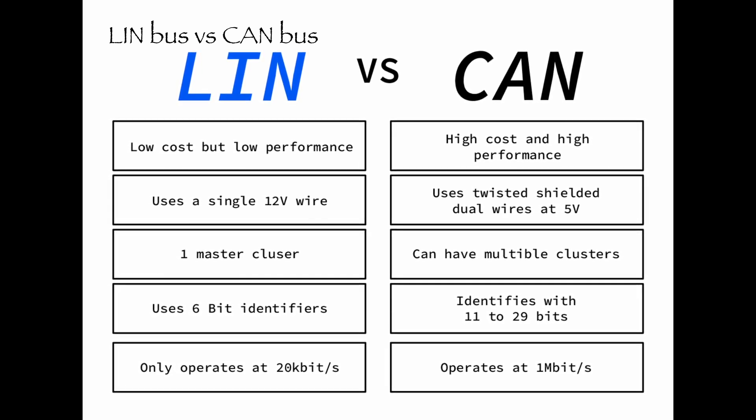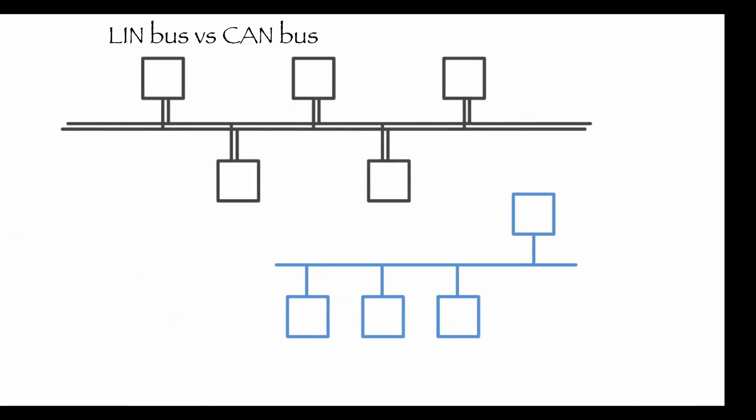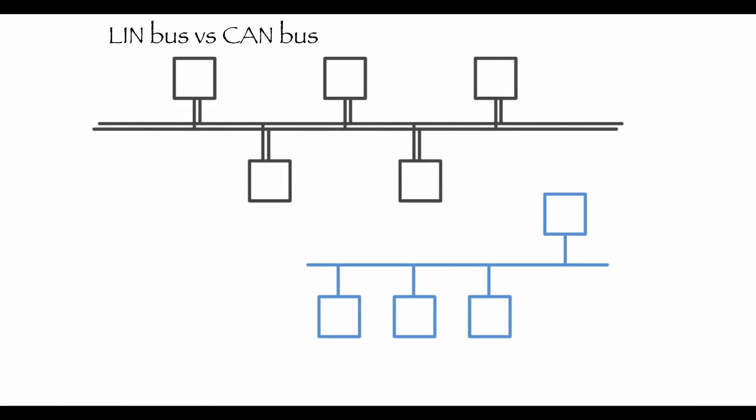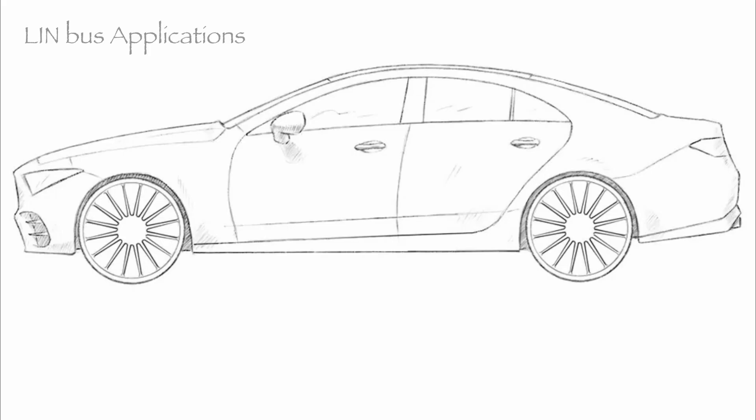A LIN master typically serves as a gateway to the CAN Bus, and LIN is deterministic rather than event-driven. Moreover, a LIN cluster has a single master while CAN Bus can have multiple. In short, LIN Bus offers a useful alternative to CAN Bus that can serve different use cases.